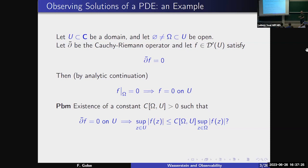A more interesting question is whether there exists a positive constant depending on ω and the big domain U such that if the PDE is satisfied on the big domain, then f in the uniform norm is controlled by what you observe — the restriction of f to the subdomain. Whether such a constant always exists is an interesting exercise; sometimes yes, sometimes no.